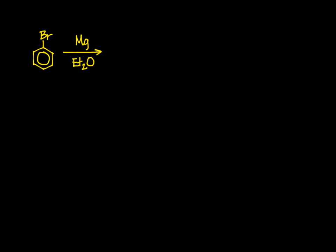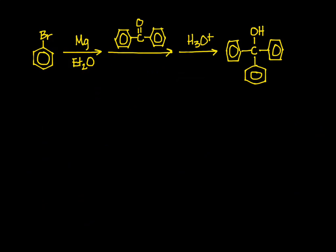The Grignard synthesis that you will carry out begins with the formation of the Grignard reagent phenyl-magnesium bromide, which is made by the reaction of bromobenzene with magnesium metal. Once that is complete, it is reacted with benzophenone, a ketone. And after that, the mixture is treated with cold sulfuric acid to produce the final product.